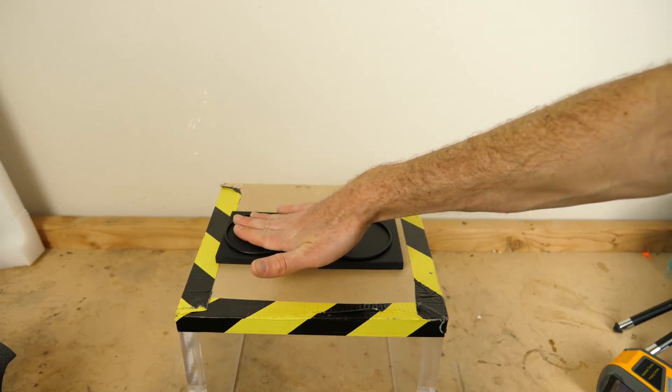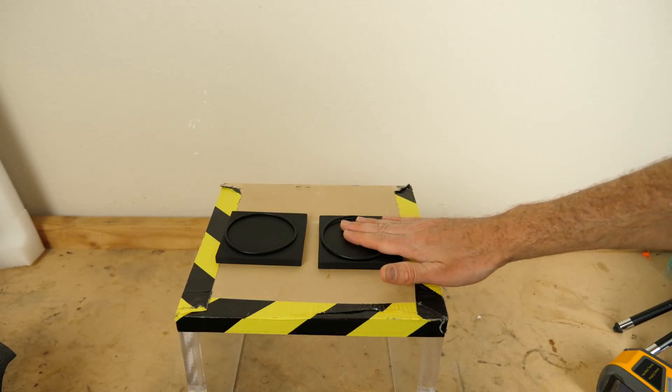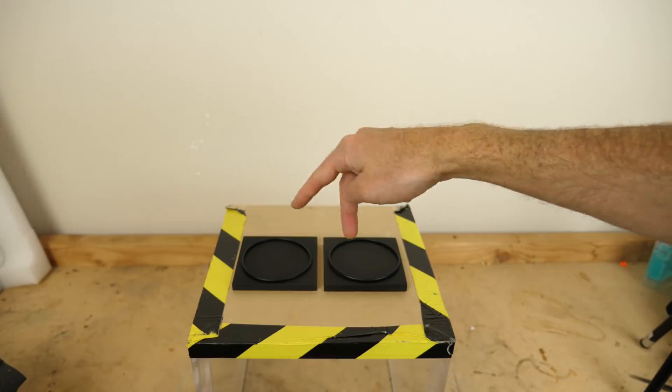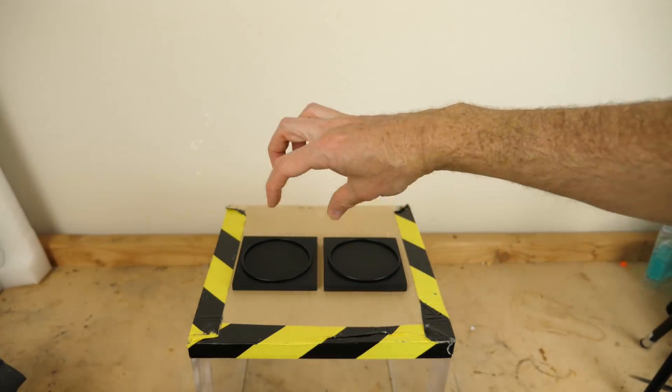But I can tell you that when I feel this block, it feels cold. And when I feel this block, it feels warm. So here's my question to you. They're at the exact same temperature, but what happens when we put an ice cube on them?